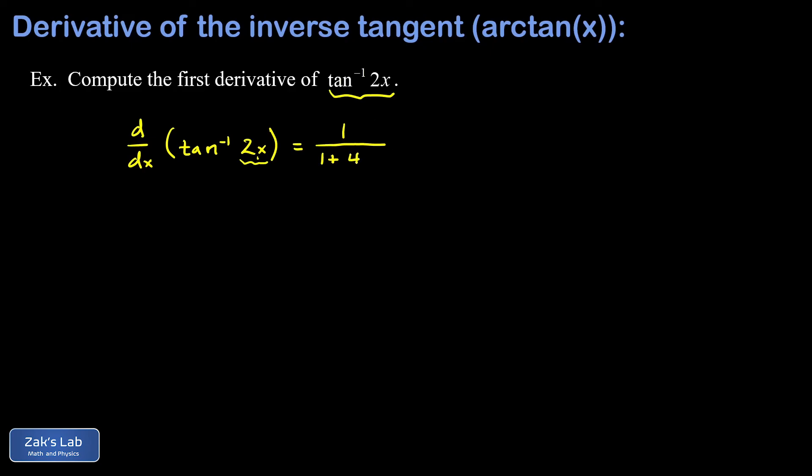And then we multiply by the derivative of the argument. The derivative of 2x is just 2. We can clean this up a little by writing it as 2 over 1 plus 4x squared, and we're done.